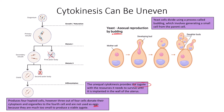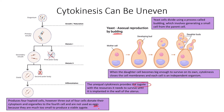In yeast cells, budding is a form of asexual reproduction in which the parent yeast cell generates small sections called buds that develop until they are ready to be on their own, at which point they completely separate from the parent. This process continues as more and more daughter buds are produced, showing an unequal distribution of cytoplasm through cytokinesis. When the daughter cells become big enough to survive on their own, cytokinesis closes the cell membrane. These daughter cells are different free-living organisms; the smaller ones will eventually grow and become new parent cells. This is an example of unequal cytokinesis.